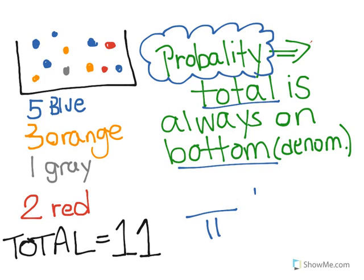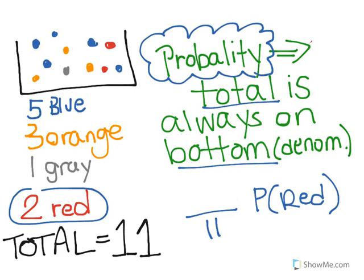Let's say we're trying to find the probability of reaching your hand in and picking out a red marble. Notice how we have two red in the box, so two would go on the top — it's however many are red over the total on the bottom.